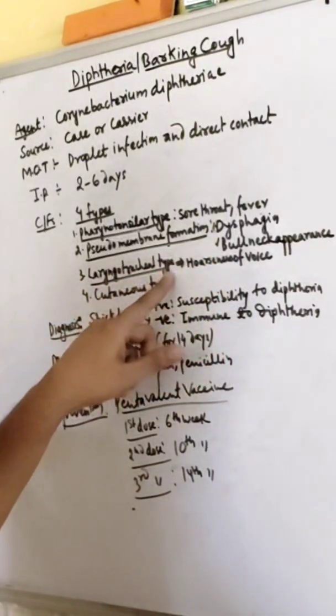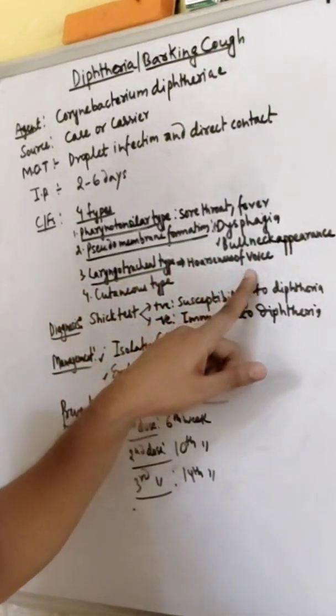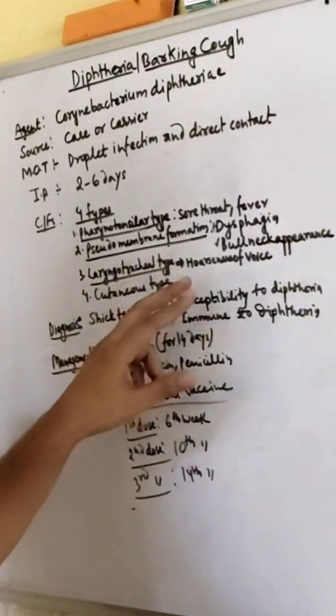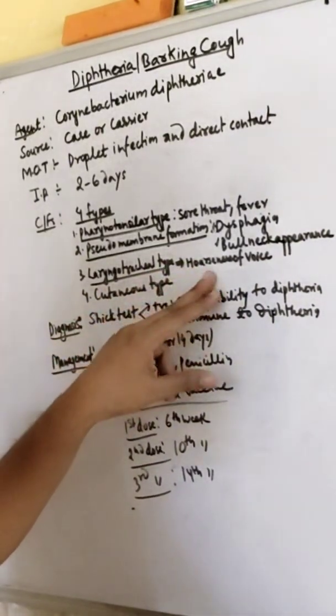The laryngotracheal type presents with hoarseness of voice. The cutaneous type presents with a skin problem.